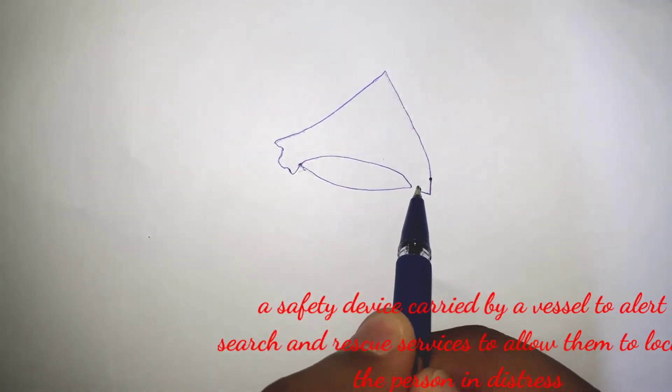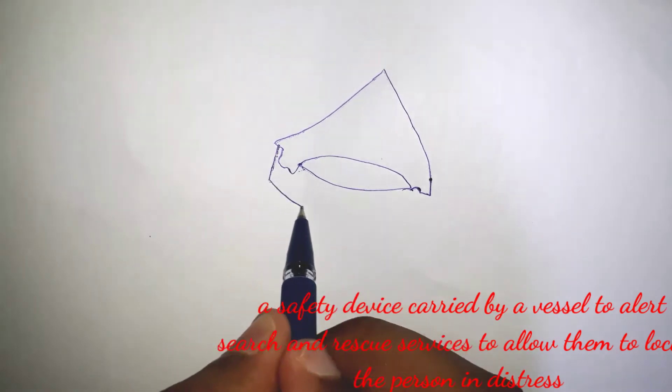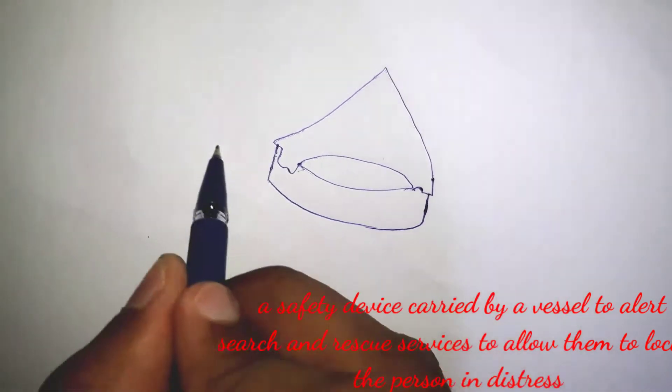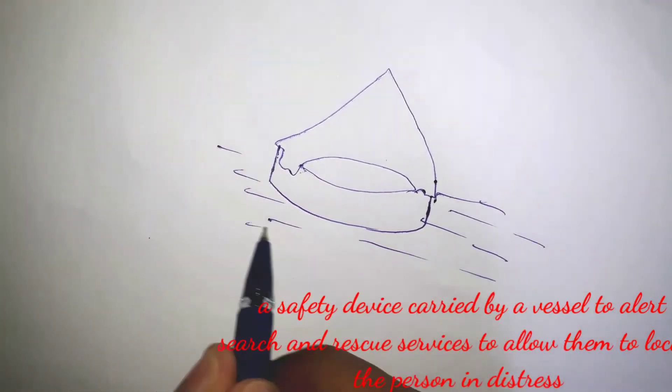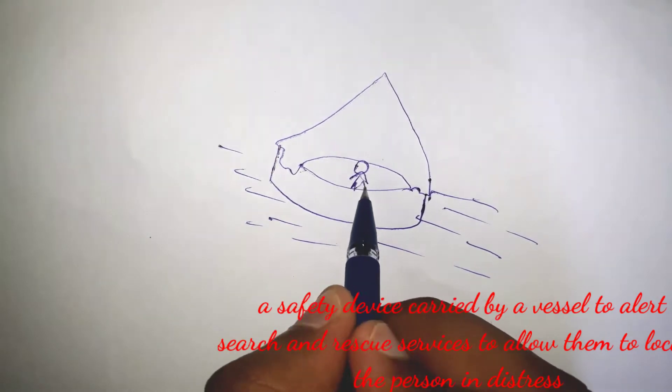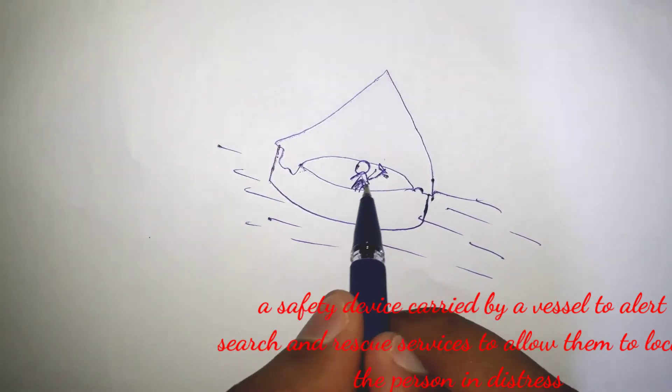An emergency position indicating radio beacon is a safety device carried by a vessel to alert search and rescue services and allow them to quickly locate the person in the event of an emergency.